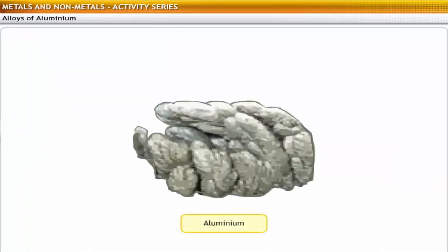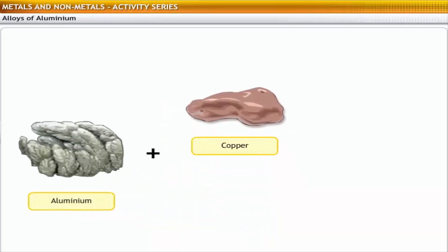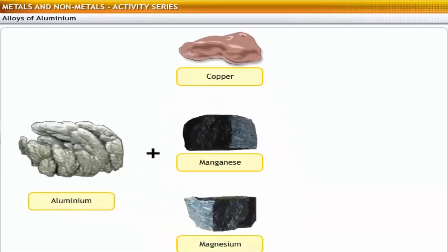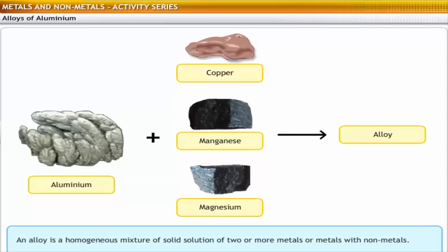Extracted aluminium, in combination with other metals like copper, manganese and magnesium, forms alloys. An alloy is a homogeneous mixture or solid solution of two or more metals, or metals with non-metals.